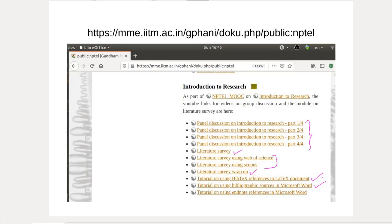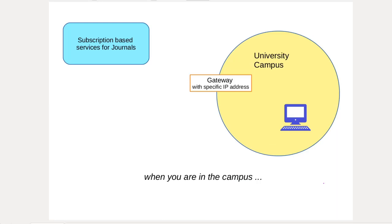You can also enter references manually at the end of a document using EndNote, and that is also described. Now comes the question: you are at home and don't have access to the subscription resources from your university. Most websites offering subscription-based services for journal articles recognize who is authorized to access them based on the IP address. When you are on campus, your computer connects through the LAN to the gateway, which has a specific IP address recognized by services like Web of Science.